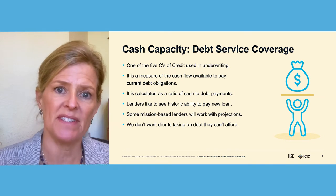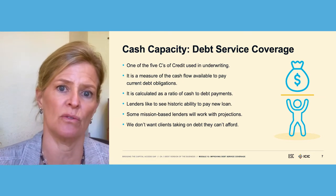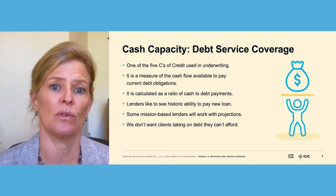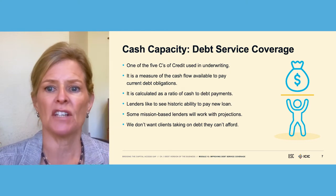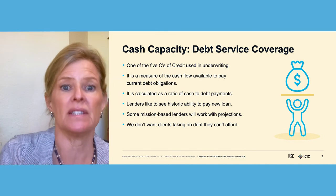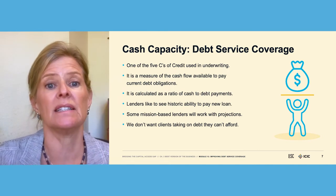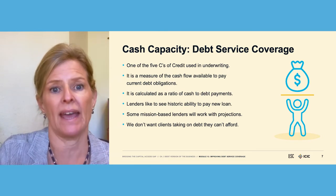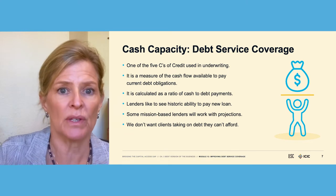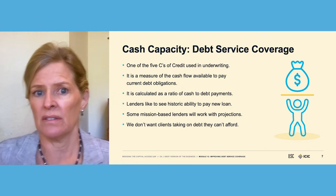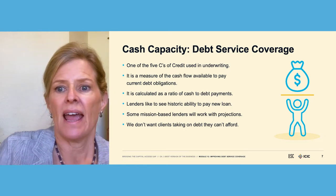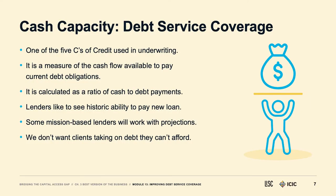Cash capacity or debt service coverage is one of the five C's that lenders use to determine whether to approve a loan application. It's a measure of cash flow available to service debt obligations — looking to see if there's enough cash to pay a new loan payment with a little cushion. It's calculated as a ratio of cash to debt service, or loan payments.